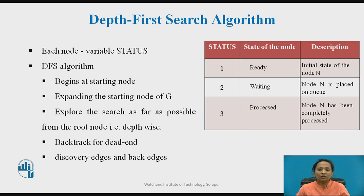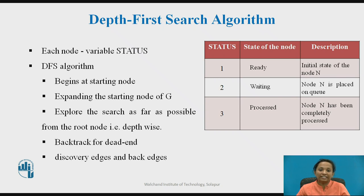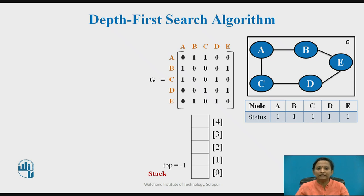Depth-First Search begins at the root node and explores all neighbour nodes. DFS progresses by expanding the starting node and then going deeper and deeper until a goal node is found or a node with no children is encountered. When a dead end is reached, the algorithm backtracks to the most recent node not completely explored. In DFS, edges leading to a new vertex are called discovery edges, and edges leading to an already visited node are called back edges.